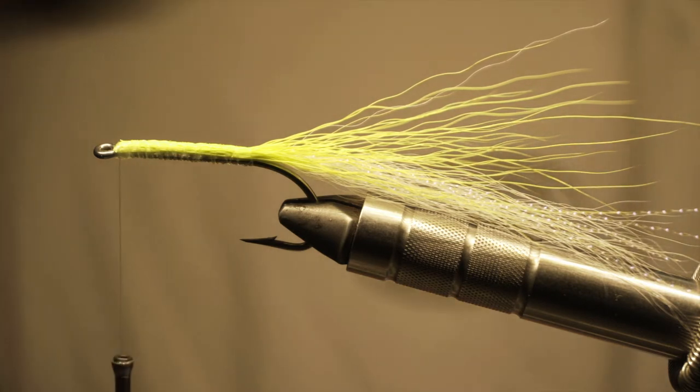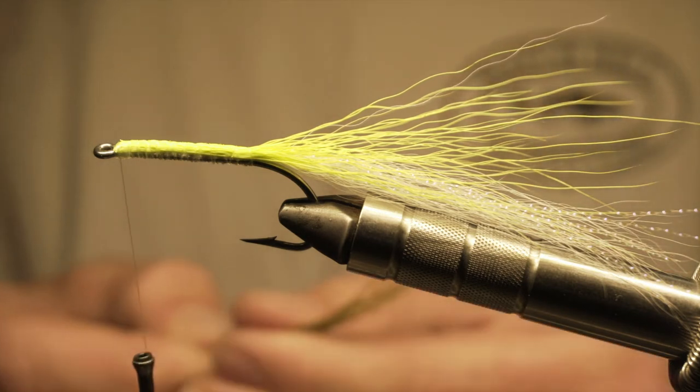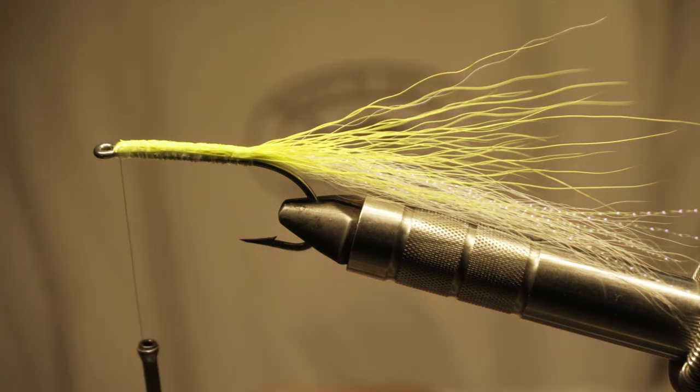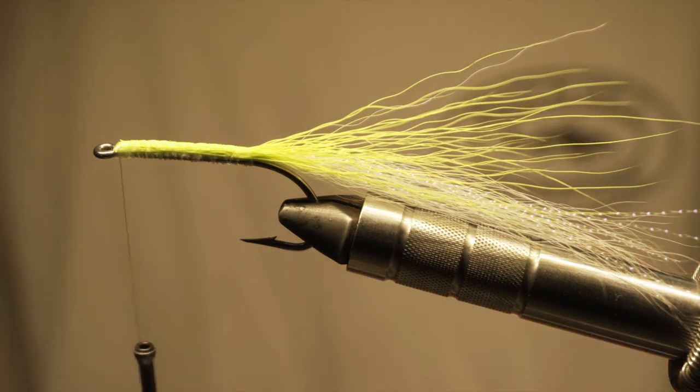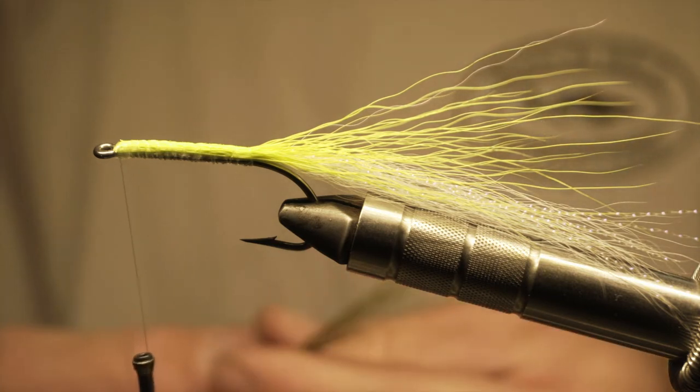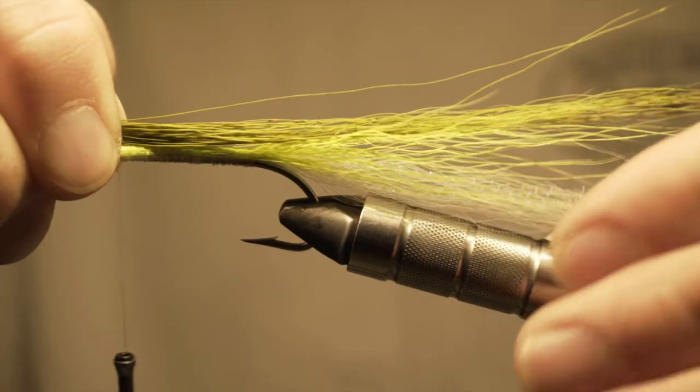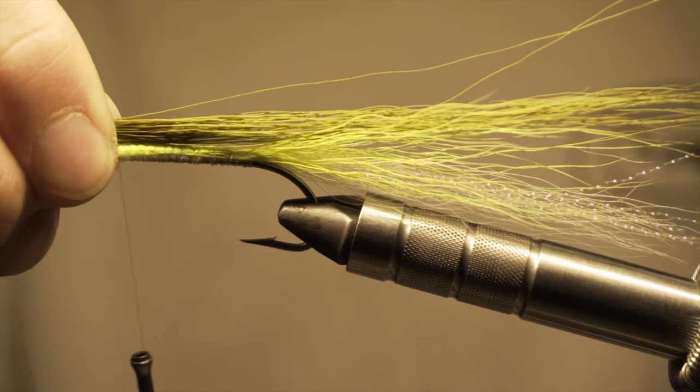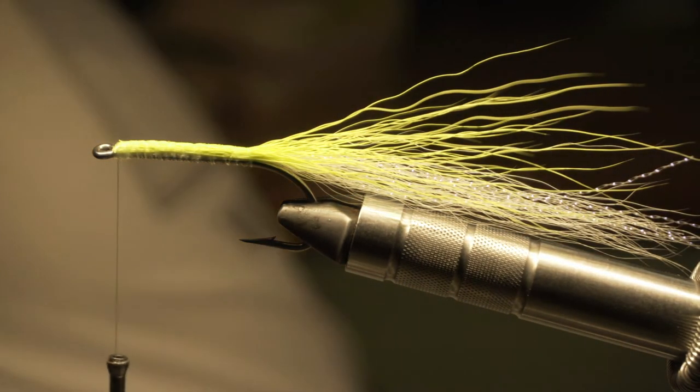And now we're ready for our olive bucktail. This one's really unorganized so we're definitely going to take some time and line up some of these fibers. That looks about right. You want to measure that to the back. You want all of your strands of bucktail to be about at the same spot with a little bit of leeway to create that taper.